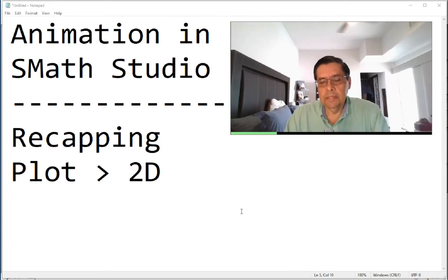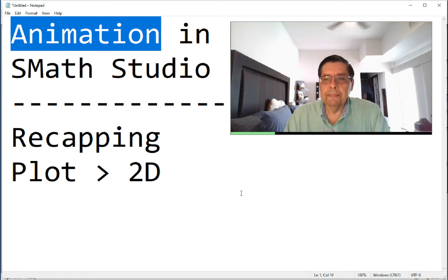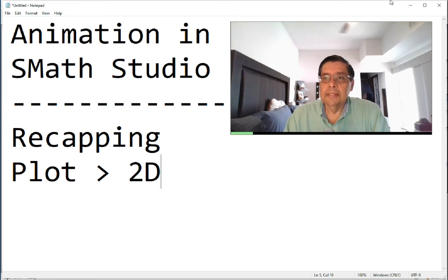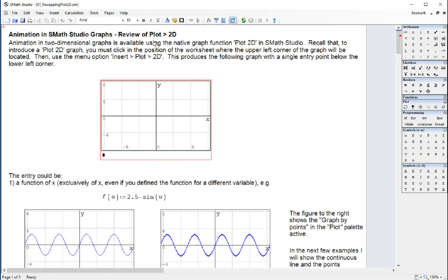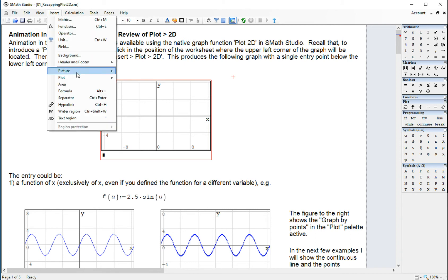With the present video, we're going to start a series of videos on animation of graphics, and we're going to be addressing the animation using Plot2D. Plot2D is the native plotting function for two dimensions in SMAS Studio, and can be found by doing Insert Plot2D.